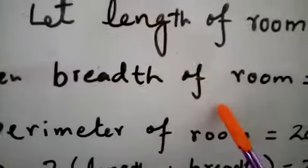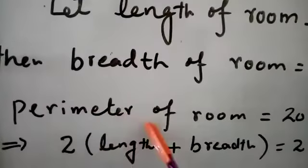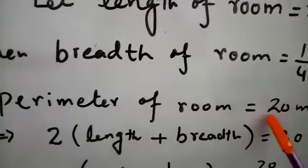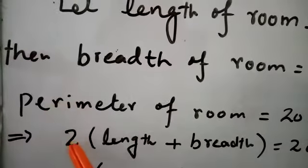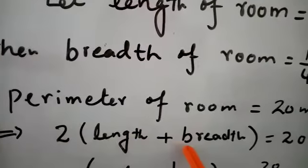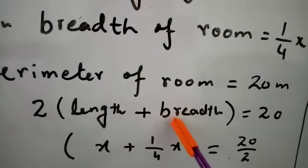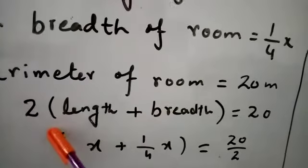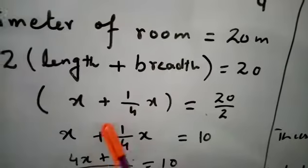Then breadth of the room is 1/4 of X. Perimeter of room is given, that is 20. By formula or by definition, perimeter equals 2 into (length plus breadth) equals 20. Putting length X, breadth 1/4X, and dividing by 2 on right-hand side, we get X plus 1/4X equals 10.